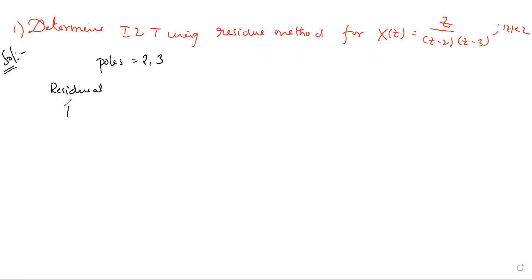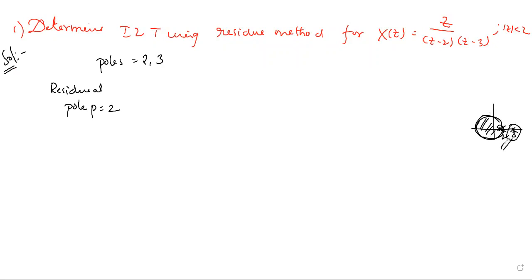We need to calculate residues. Residue at pole p equal to 2: since the ROC is mod Z less than 2, the circle has radius 2. The pole at 2 lies on the boundary and is considered inside, but the pole at 3 is outside the closed curve — outside the region of convergence. So we only need to calculate one residue, at pole p equal to 2.